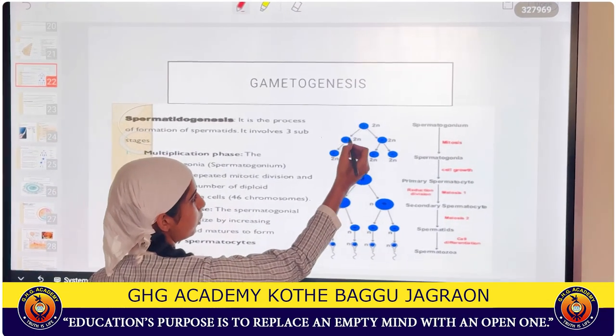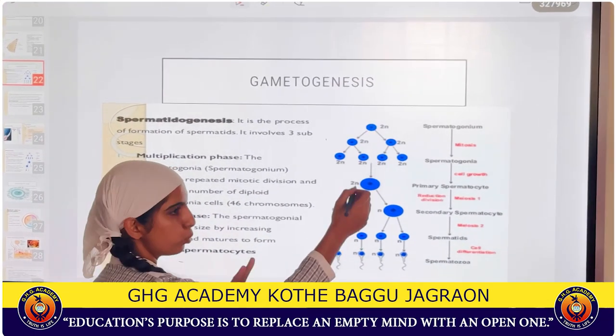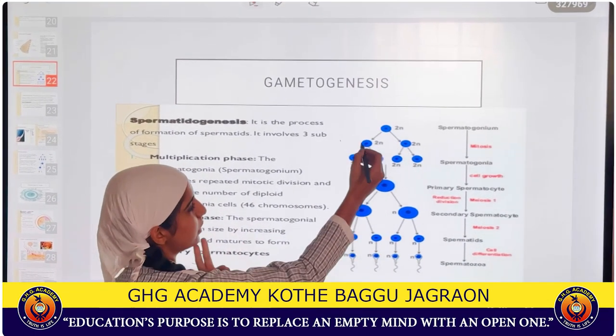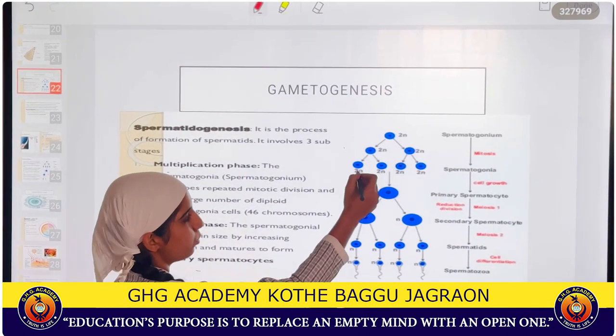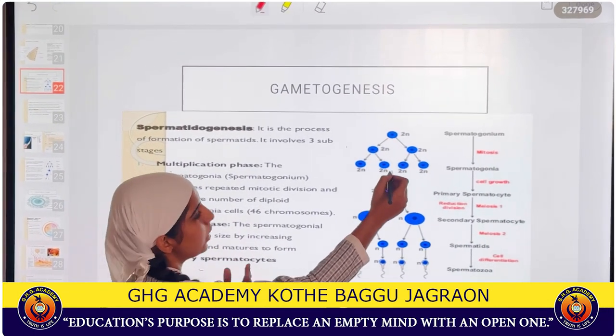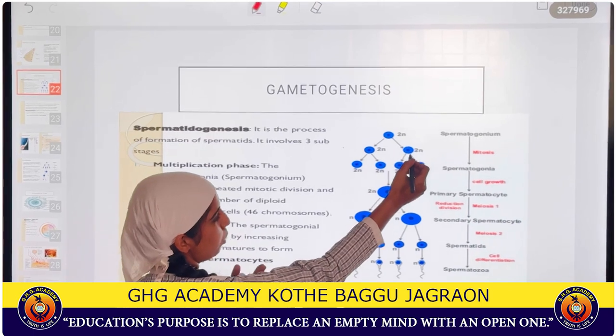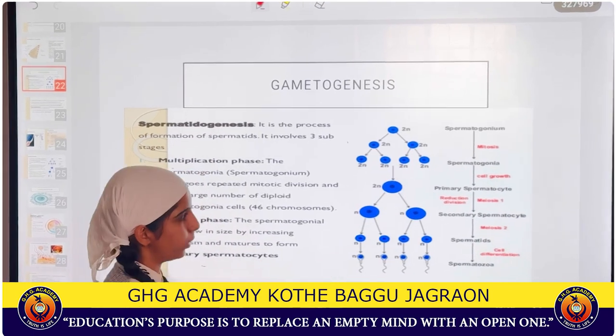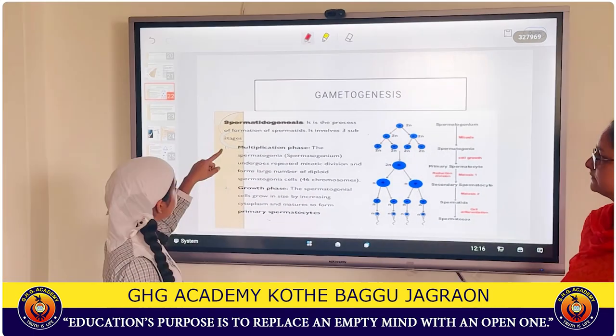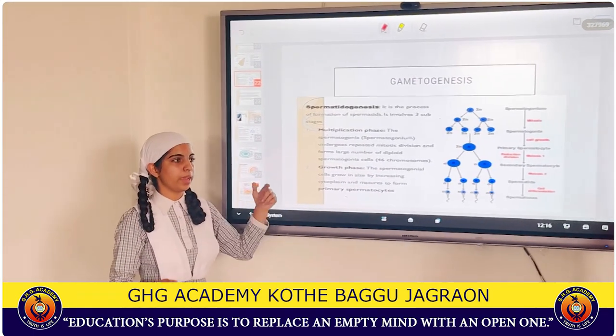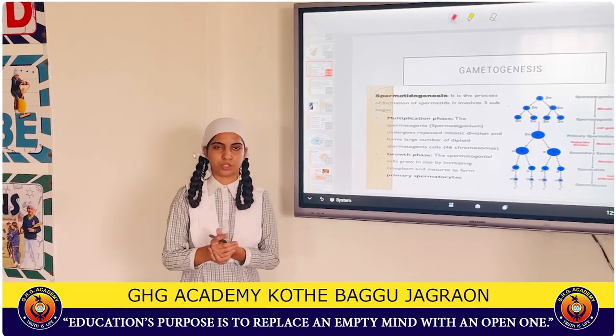First of all, the 1 will be divided into 2, then further this will divide into 2 again, and this will also divide into 2 again. This process is known as the multiplication phase.